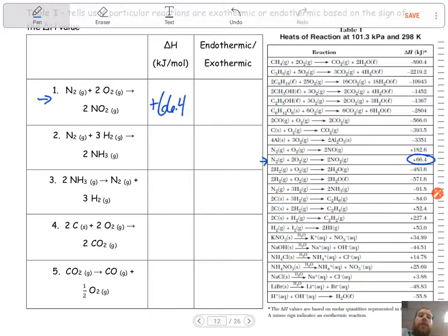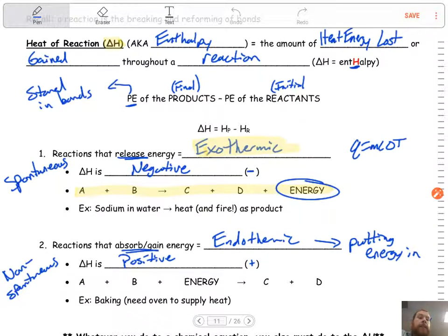It's a positive 66.4 kilojoules per mole. The only other thing we have to know is endothermic or exothermic. So this is going back to our signs. That sign is going to tell us.